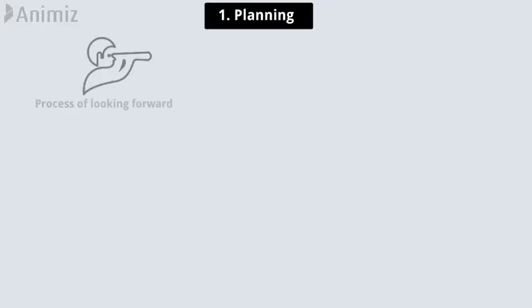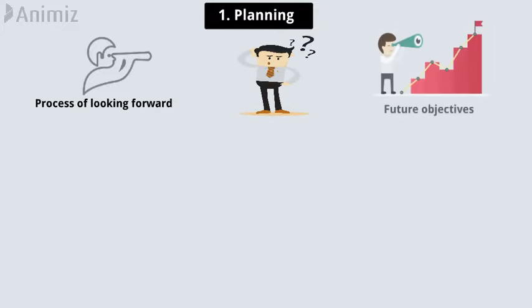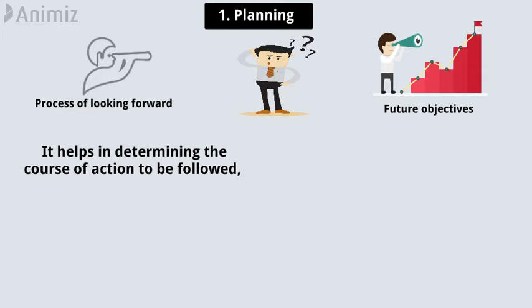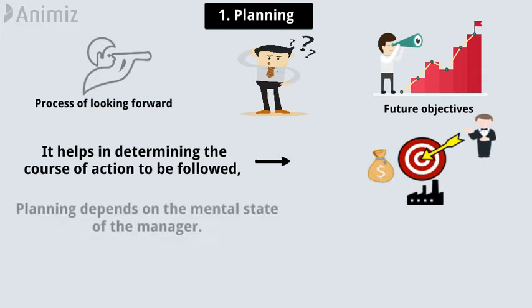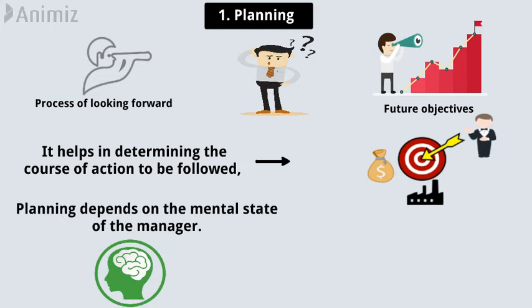The first function is Planning. Planning is the process of looking forward. It is basically deciding in the present about the future objectives, and it helps in determining the course of action to be followed for achieving those organizational goals. Planning depends on the mental state of the manager. It is a process that involves thinking before doing something.